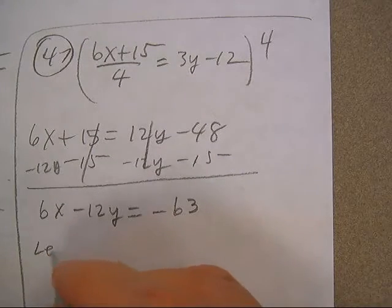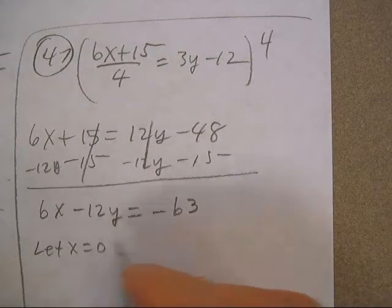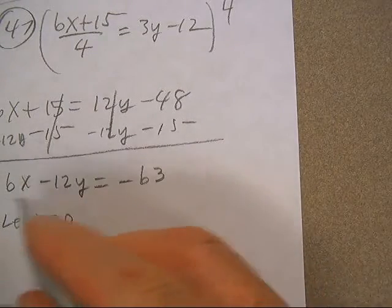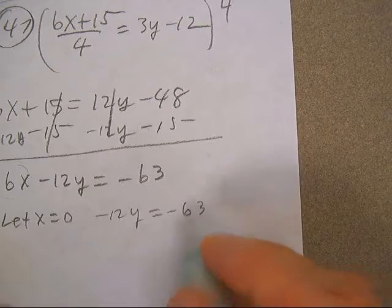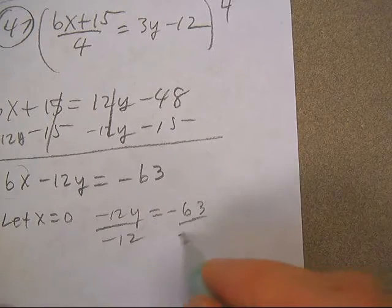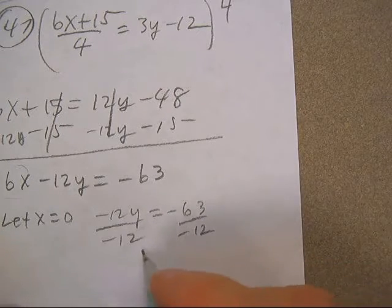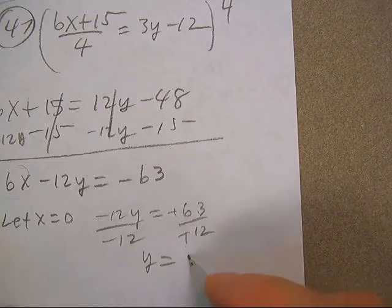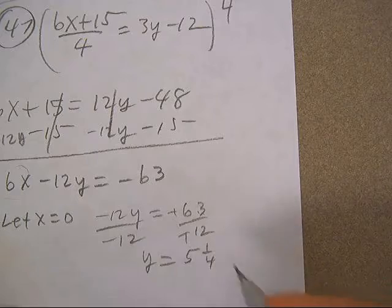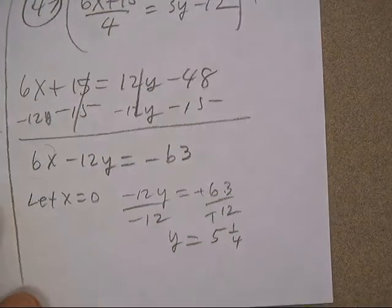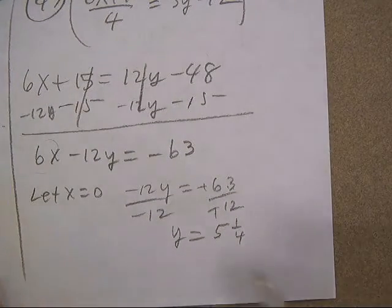And now I want the intercepts, so you want to let x equal 0. So when you do that, this goes away, and you get negative 12y equals negative 63. Divide by negative 12, and y is, that goes in there 5 times, and 3 twelfths is a fourth. So that one's a fourth. That won't be too hard to graph, 5 and a fourth.